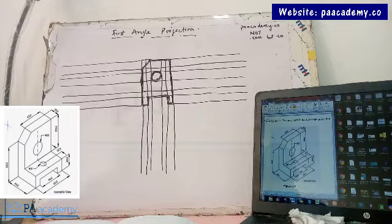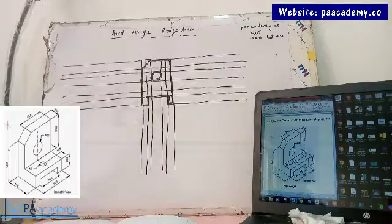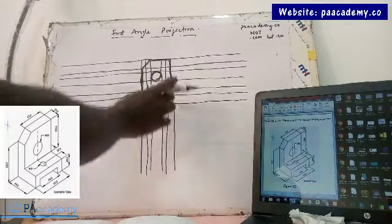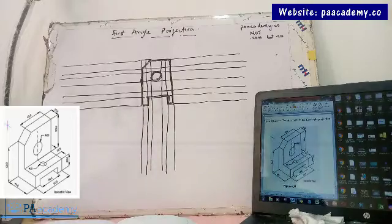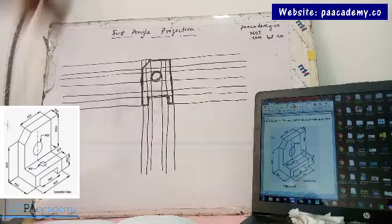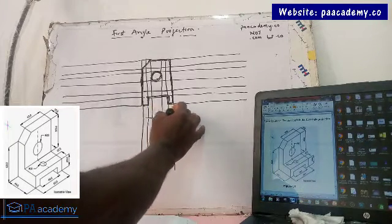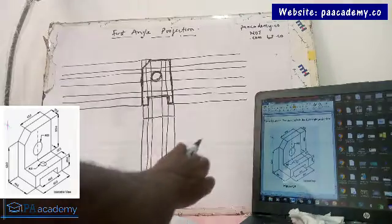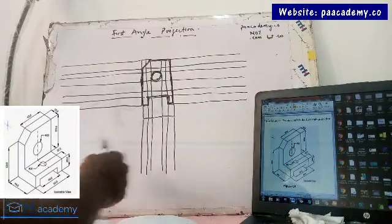The next thing is for us to draw the plan. Don't forget the plan will be underneath here — you can give it any distance. The plan is when you are looking at it from the top. So what do you see? If you are looking at it from the top, you are going to see the full edges. So let's draw that.